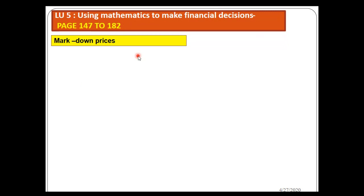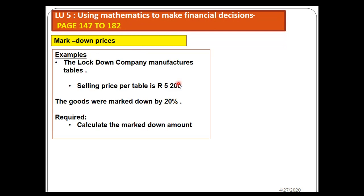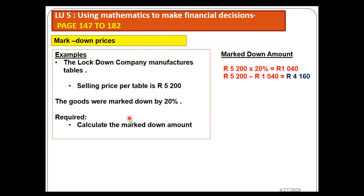Let's look at a markdown example. A company manufactures tables; the selling price per table is R5,200, and they decided to mark down by 20 percent. The markdown amount is R5,200 × 20% = R1,040. The marked-down selling price is R5,200 − R1,040 = R4,160. Note the difference: R1,040 is the markdown amount, and R4,160 is the price at which the goods will be sold.